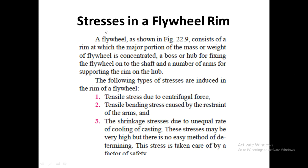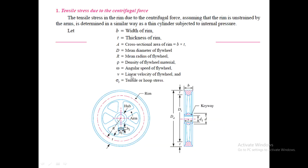Instead of calculating shrinkage stress, we consider a factor of safety for the stress values. Looking at the flywheel, we have the rim, the inner hub, the centermost shaft component, and the different arms. In this picture we can see about six arms.